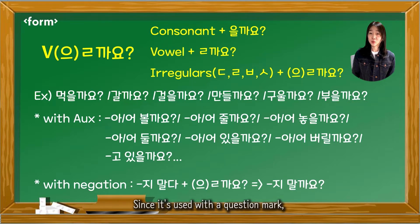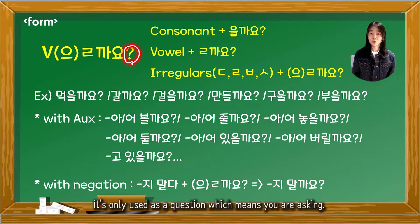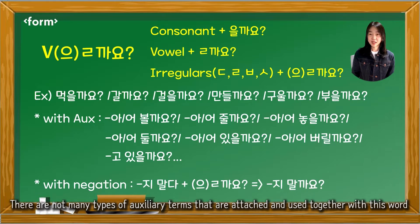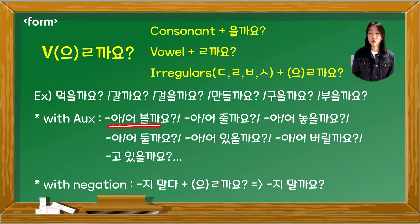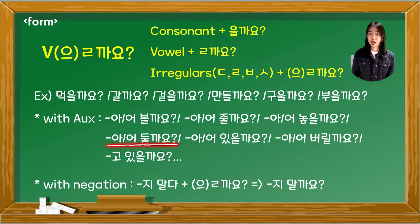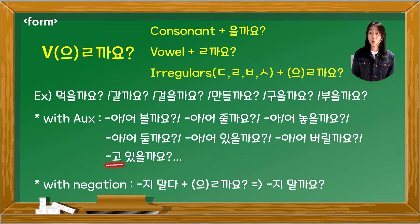Since it's used with a question mark, it's only used as a question — meaning you are asking. There are not many types of auxiliary terms attached and used together with this word, as long as it functions as asking for consent. Examples include: 아/어 볼까요?, 아/어 줄까요?, 아/어 놓을까요?, 아/어 있을까요?, 아/어 버릴까요?, 고 있을까요? — and not many more.